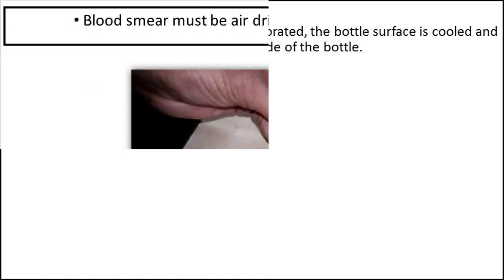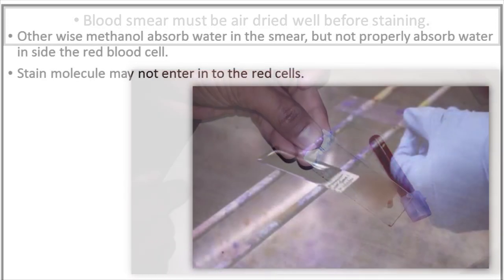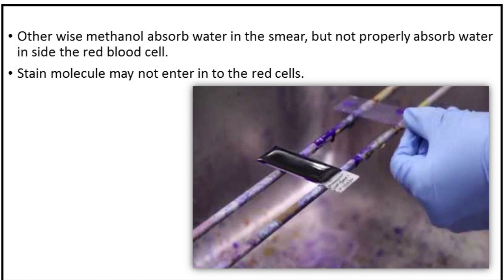Blood smear must be air dried well before staining. Otherwise, methanol absorbs water in the smear but not properly inside the red blood cells. Because of that, stain molecules may not enter into the red cells.